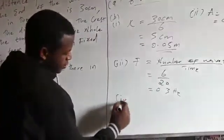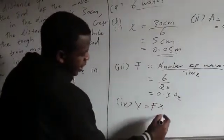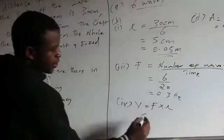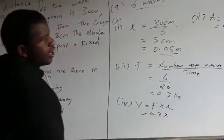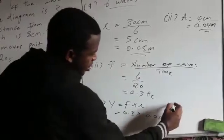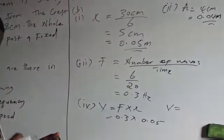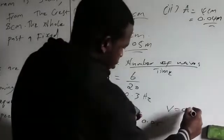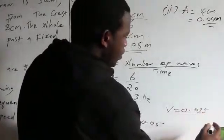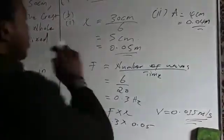For roman numeral 4, I'm supposed to calculate the speed. The formula for speed is V equals frequency multiplied by wavelength. My frequency is 0.3 and my wavelength is 0.05, so speed equals 0.3 multiplied by 0.05, which gives 0.015 metres per second. This is how you calculate this question.